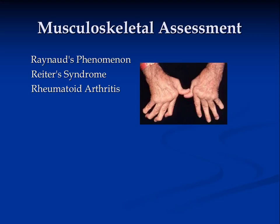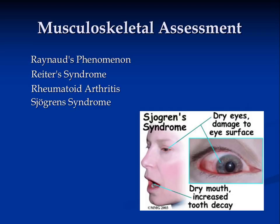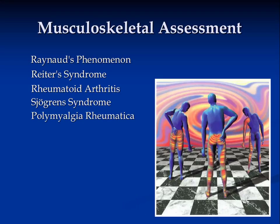Rheumatoid arthritis and Sjogren's syndrome are also conditions to be aware of. Polymyalgia rheumatica is an inflammatory disorder involving pain and stiffness in the shoulder and usually also the hip. Symptoms include pain and stiffness in both the shoulders and neck. Polymyalgia rheumatica almost always occurs in those over 50 and the cause is unknown. It may occur alone or with, or before, giant cell arteritis — also called temporal arteritis — which is inflammation of blood vessels usually in the head.